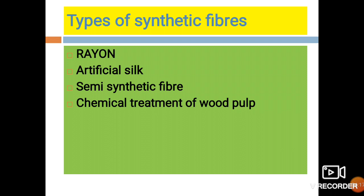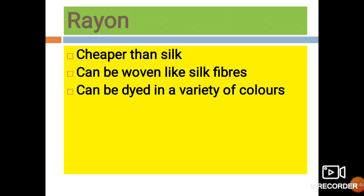Rayon is also called a semi-synthetic fiber. The raw material used for the preparation of rayon is wood pulp, which comes from a natural plant source. Because wood pulp is from a natural source and is treated chemically, we cannot call rayon fully synthetic. So rayon is called artificial silk or a semi-synthetic fiber.